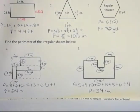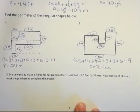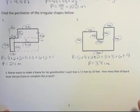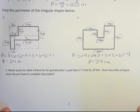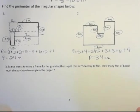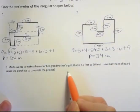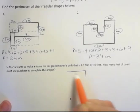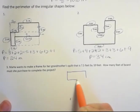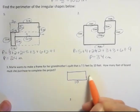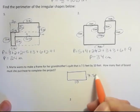And then the last one is a word problem. Marta wants to make a frame for her grandmother's quilt that is 7½ feet or 7.5 feet by 10 feet. How many feet of board must she purchase to complete the project? Well, she's got a frame and it's got two dimensions given. So I think we should have probably said rectangular frame, but maybe we can imply that. So she's got 10 feet on one side and 7.5 feet on the other.